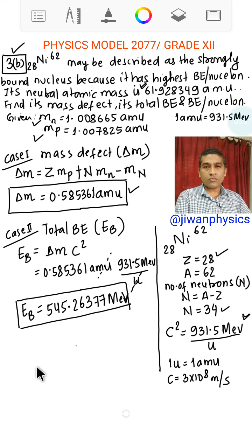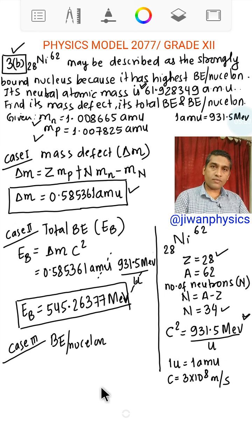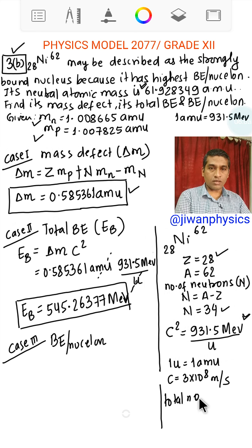Now we have to find binding energy per nucleon. And the total number of nucleons in nickel Ni is 62. Let me write over here, total number of nucleons equals 62.